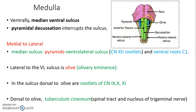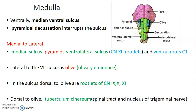On the ventral medulla, from medial to lateral: starting from the median sulcus, we have the pyramids on both sides. After the pyramids is the ventrolateral sulcus, which contains rootlets of the 12th cranial nerve (hypoglossal) and ventral roots of the first cervical nerve. Lateral to the ventrolateral sulcus are the olives with the olivary eminence. In the sulcus dorsal to the olive are rootlets of cranial nerves 9, 10, and 11 — glossopharyngeal, vagus, and accessory nerves.